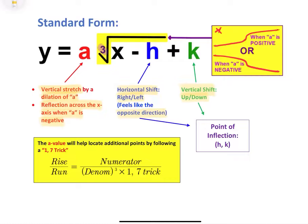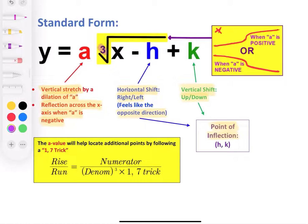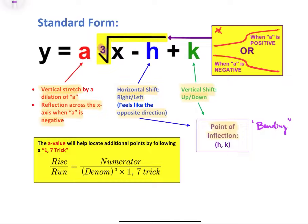Instead of a starting point, we have something called a point of inflection. The point of inflection just means the point where it starts to bend or change — so this is our bending point. The a value is also going to help us locate our additional points just like with our square root function, except we're not doing a 1-3-5 trick. We're going to do something called a 1-7 trick. The rise is still going to be the numerator of that a value, and the run will be our denominator cubed, times our 1-7 trick. Let's put all of this into action with some examples.